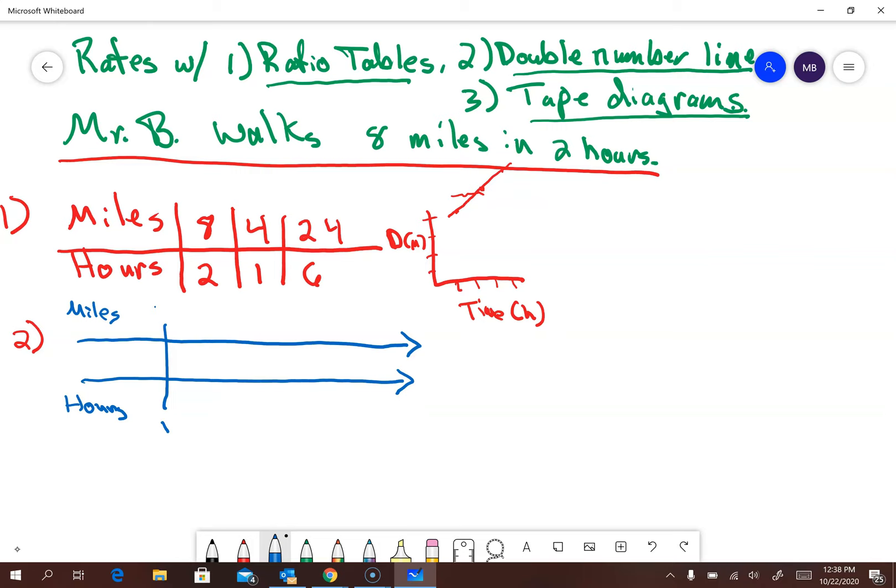And hours is this one. And I'm just going to go right here. In one hour he walks four miles. Two hours, he walks eight miles. Three hours, 12. So this is going to go on like that. And that would equal the same graph, right? It's exactly the same.